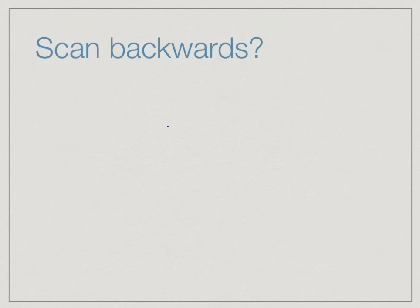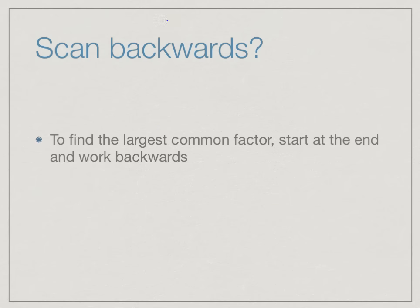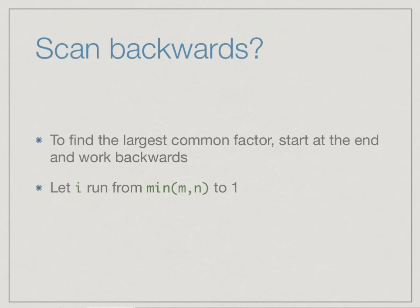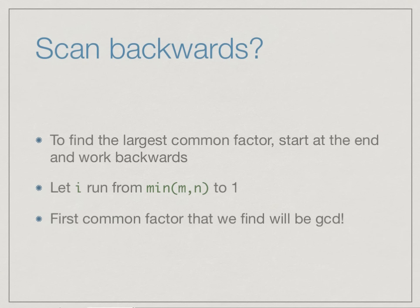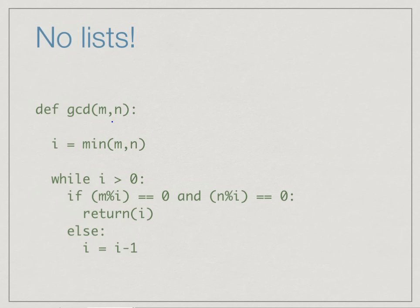We can still do further optimizations. Since we are looking for the largest common factor, why start at the beginning, which gives us the smallest? We can start at the end of the list and work backwards — starting from the minimum of M and N and working back to 1. The guarantee is that 1 will always show up as a common factor, so if there are no others, at the very end we will find 1 as the GCD.